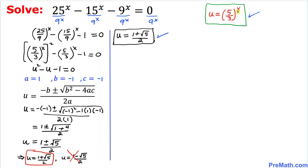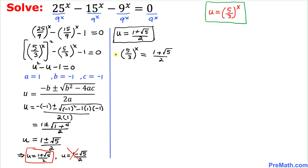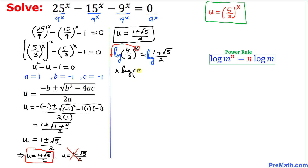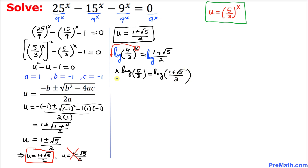We know that u = (5/3)^x, and our accepted value is u = (1 + √5)/2, so we have (5/3)^x = (1 + √5)/2. Taking the logarithm on both sides and applying the power rule, we can bring the exponent x to the front: x · log(5/3) = log((1 + √5)/2).